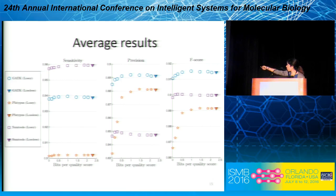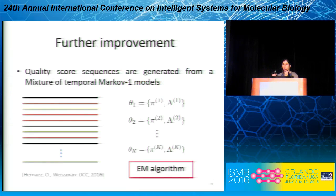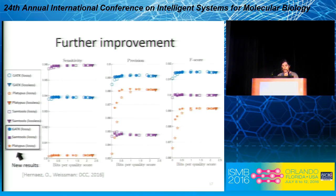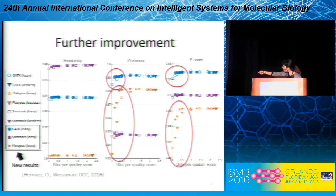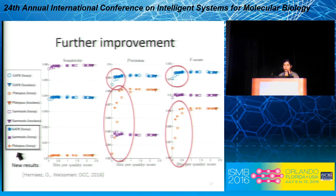We wanted to know if we could improve performance further at small rates. We did a further improvement to our algorithm by clustering the data prior to compression. Instead of assuming all the data is generated by a single Markov chain of order one, we assume there is a mixture of Markov models. We use the EM algorithm to find the parameters of this model and to decide which read was generated from which model. By doing this, we get improvement for very small rates — for example, with GATK, and more impressively, with Platypus we see a notable boost in performance.